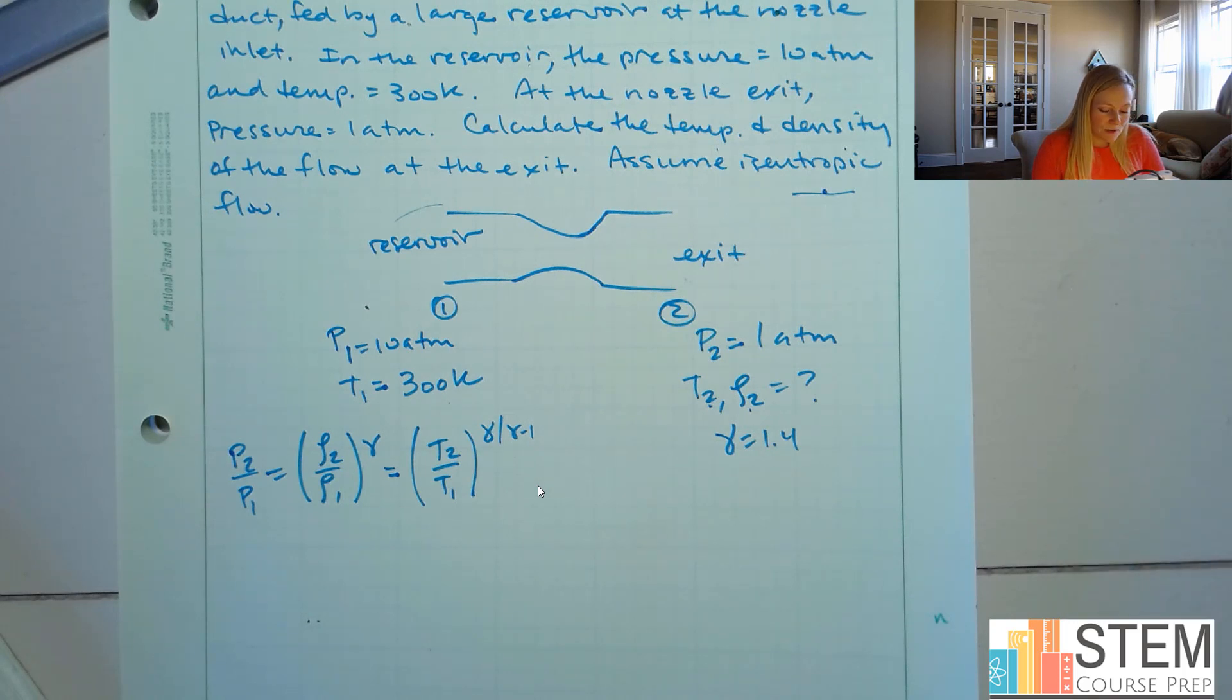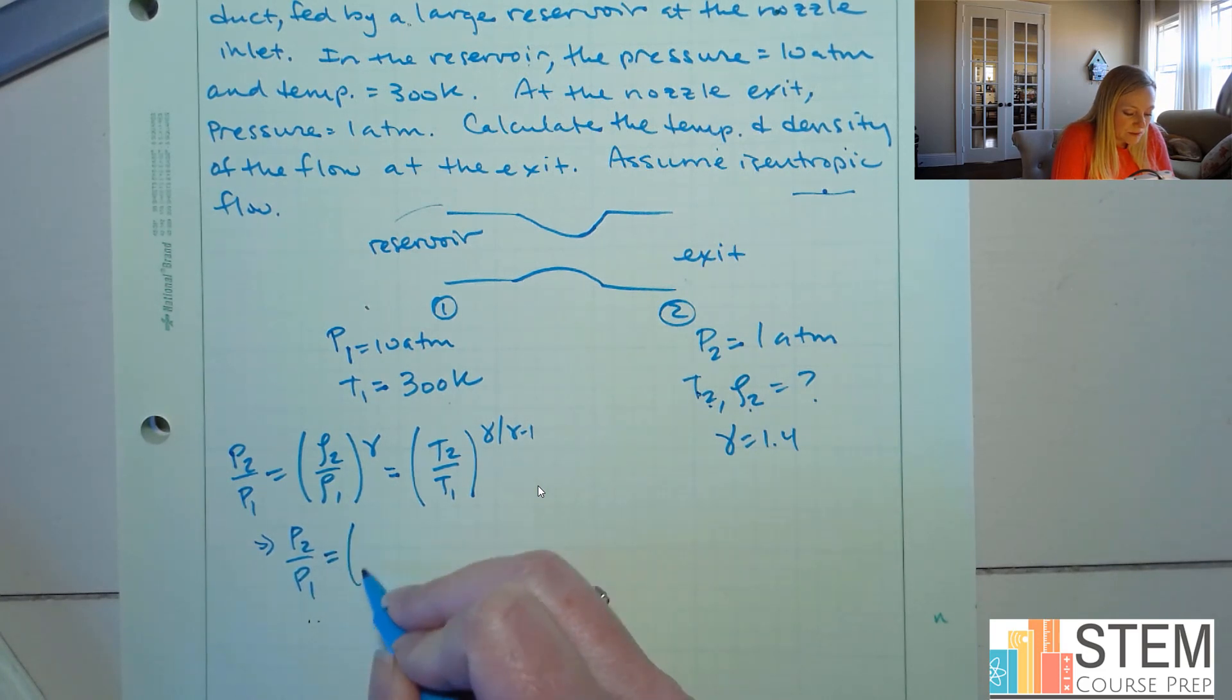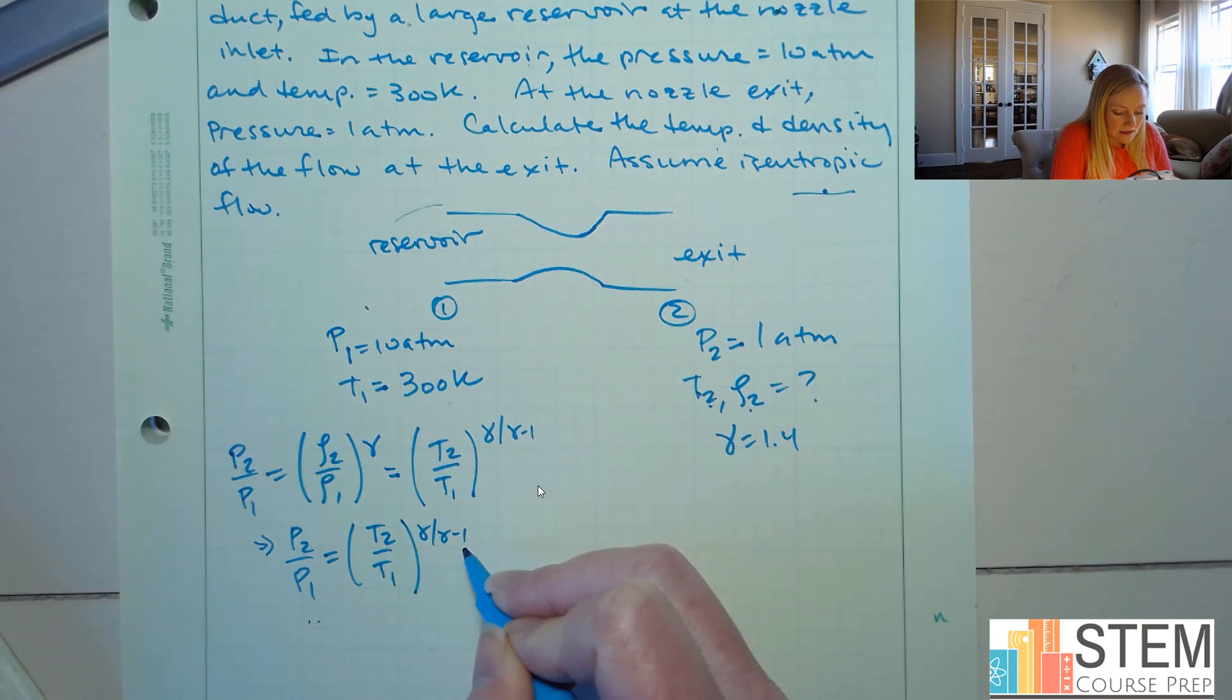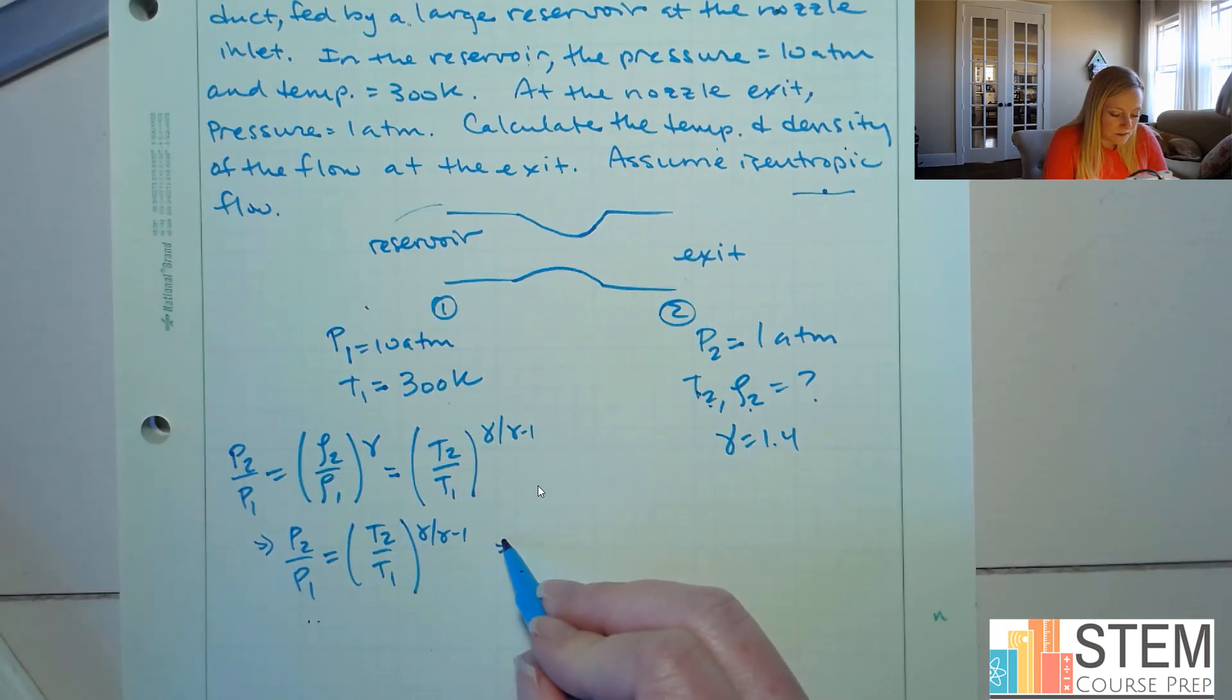All right, so basically what I want to do is I want to relate my pressure to my temperature. Let's do temperature first here. So that means we're going to use this and this. All right, so let's write that out. So we're going to have P2 over P1, and that's going to equal T2 over T1. And then we've got the power of gamma over gamma minus 1. So now all we have to do is plug everything in.